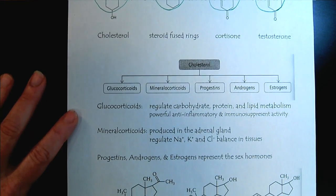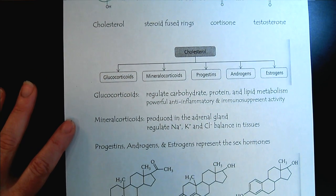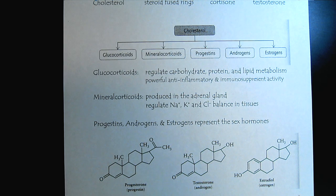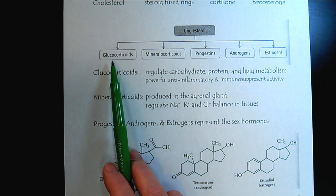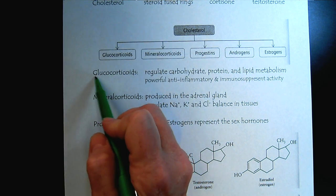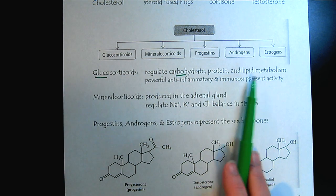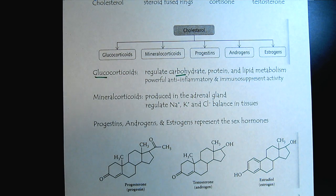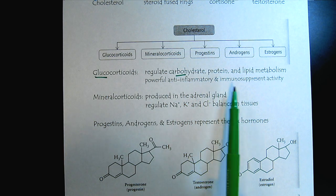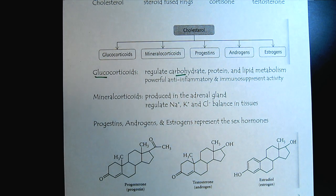The five classes of hormones that cholesterol is used to synthesize: first, we have the glucocorticoids. As you would imagine, they're related to carbohydrates, but also protein and lipid metabolism. They're also very powerful anti-inflammatory and immunosuppressant agents.